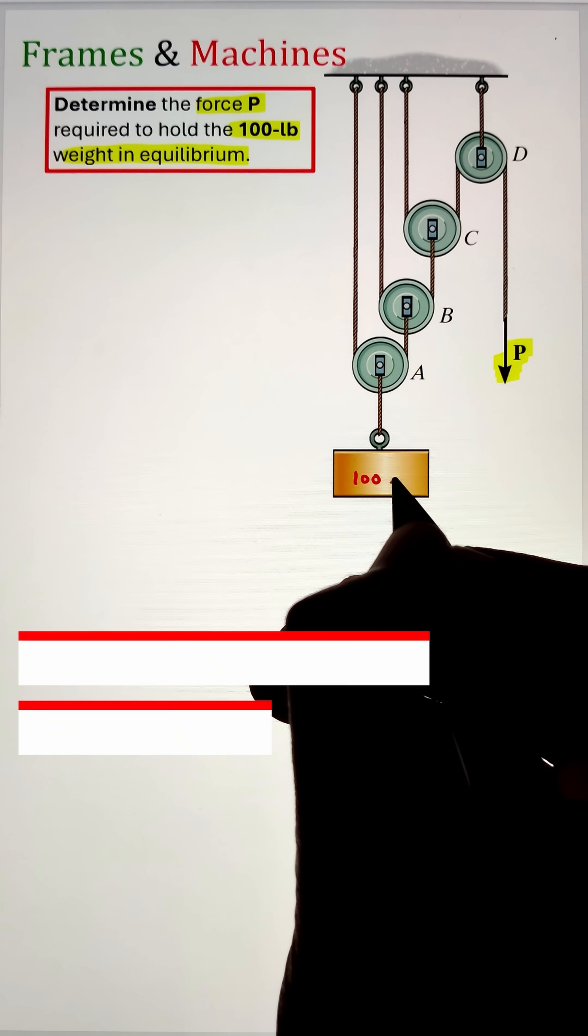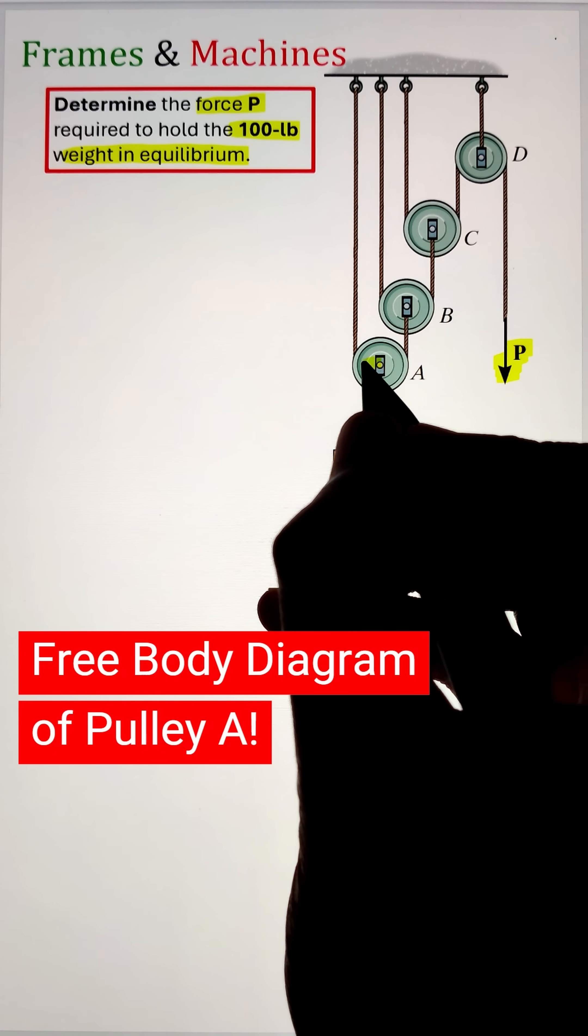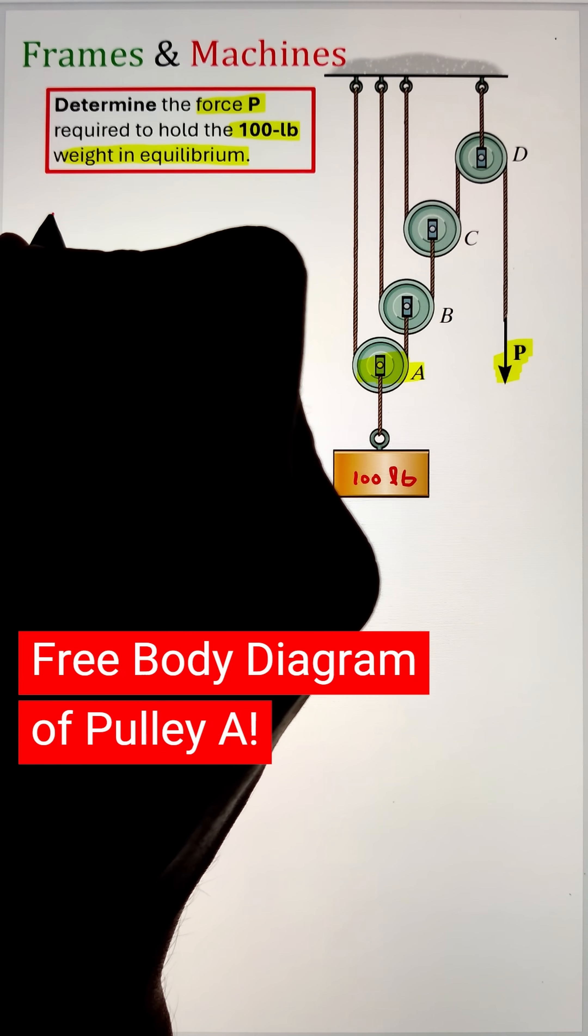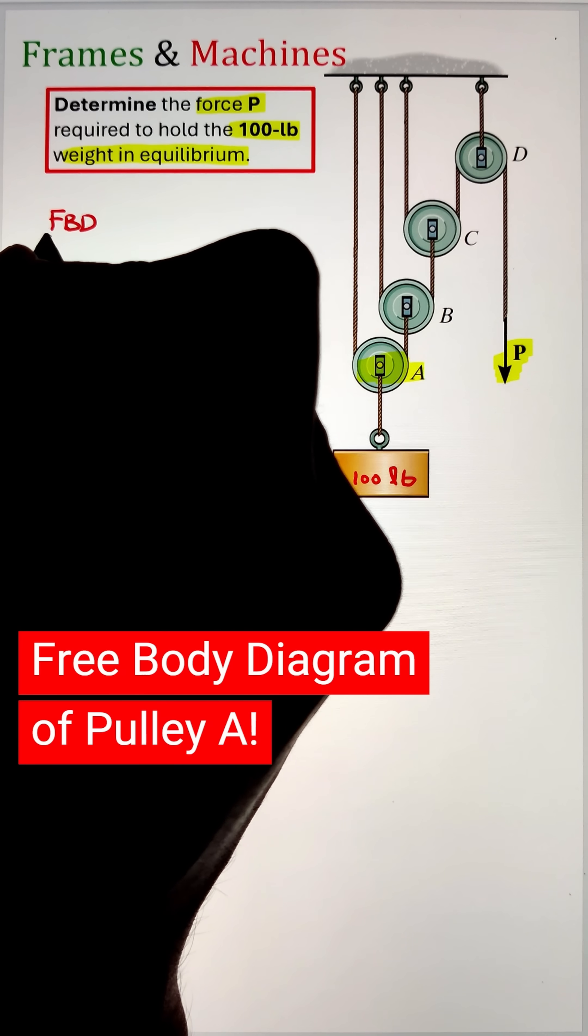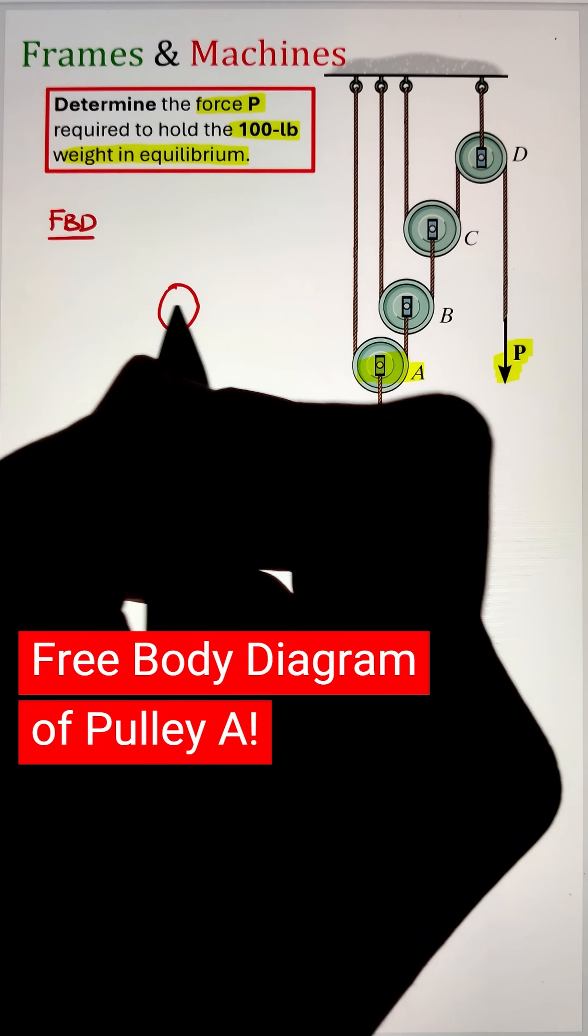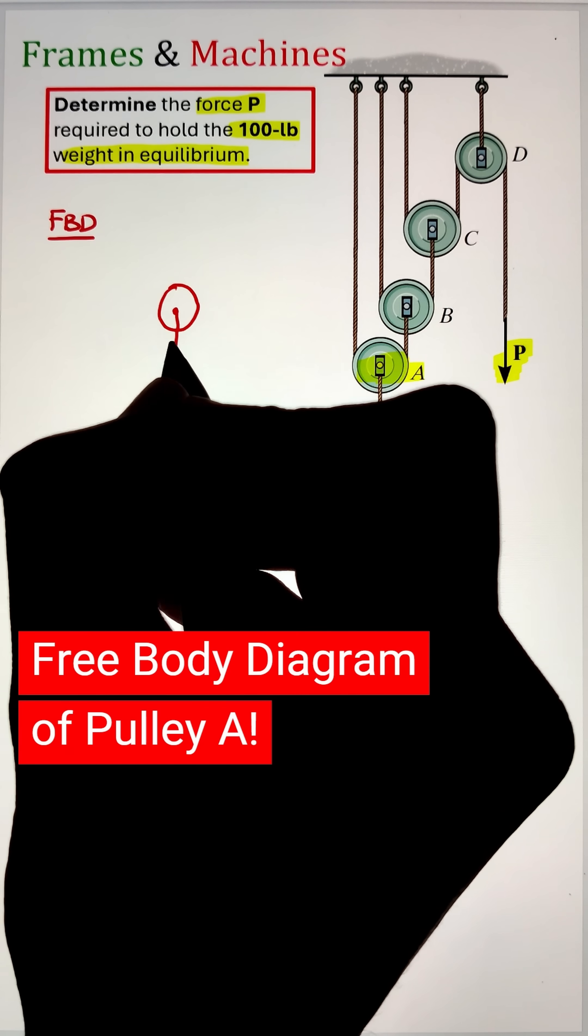we can start by developing the free body diagram of pulley A to calculate the tension in the rope connecting pulley A, which is linked to pulleys B and C. Eventually we can calculate the load P required to keep the system in equilibrium.